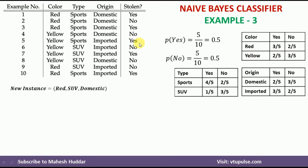Counting red: the first is yes, second is no, third is yes, fourth is no, fifth is yes — so there are 3 yes and 2 no examples. So P(color=red | yes) = 3/5 and P(color=red | no) = 2/5. For yellow, counting gives 2 yes and 3 no examples, so P(color=yellow | yes) = 2/5 and P(color=yellow | no) = 3/5.